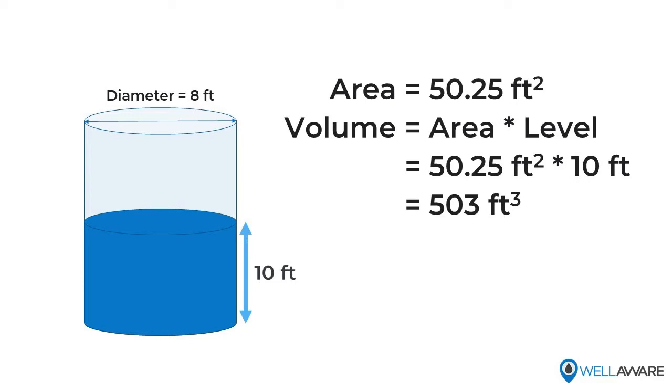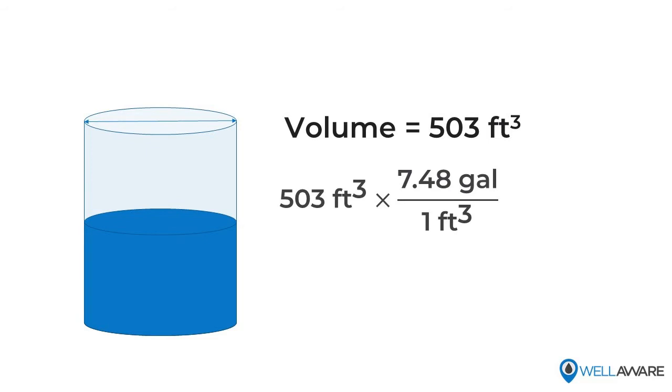Now an important note here: you want your volume reading units to match the numerator of your flow reading units. So if your flow rates are in cubic feet per second, for example, you're good to go. But if they are in gallons per minute or barrels per day, for example, you'll need to do some conversion. In this example, our flow rates are in gallons per minute, so to convert cubic feet to gallons, I'll multiply by 7.48, which is how many gallons are in a cubic foot. So now I know that with my current level reading of 10 feet, I have about 3,760 gallons of water in my tank.